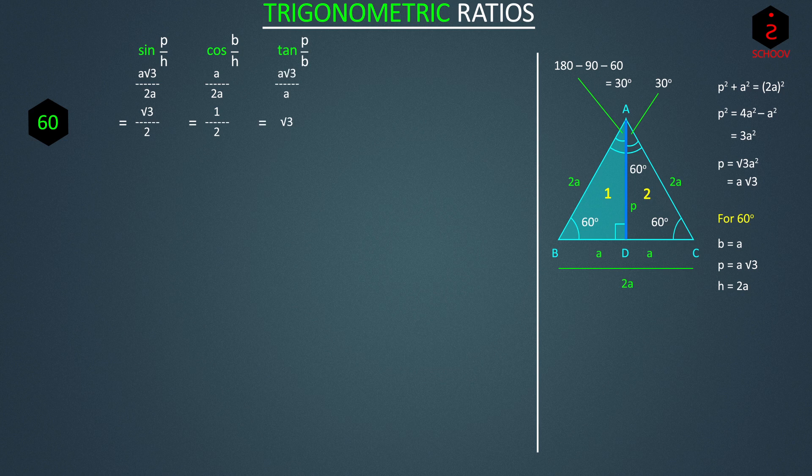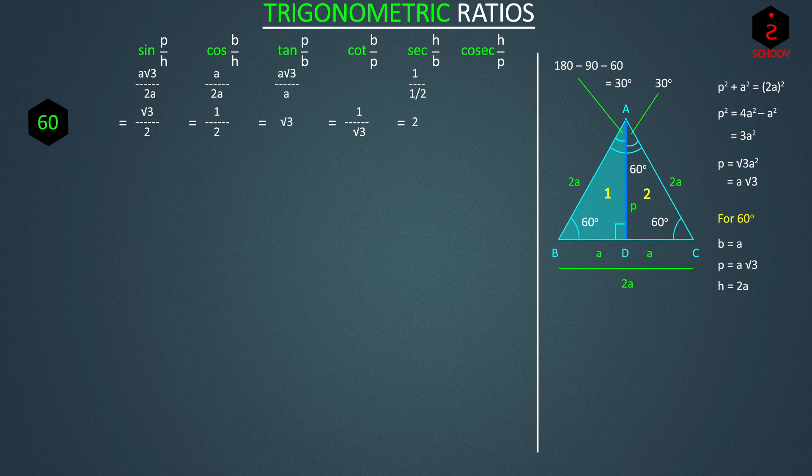Rest of the three ratios are just reciprocals. So cot 60 is equal to 1 by tan 60, that is 1 by root 3. Sec 60 is 1 by cos 60 equal to 1 by 1 by 2, that is 2. And cosec 60 is equal to 1 by sin 60, that is 1 by root 3 by 2, 2 by root 3.